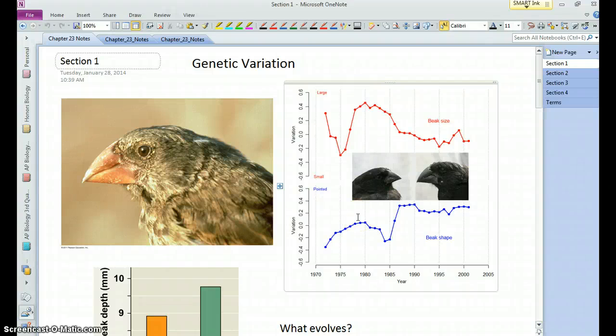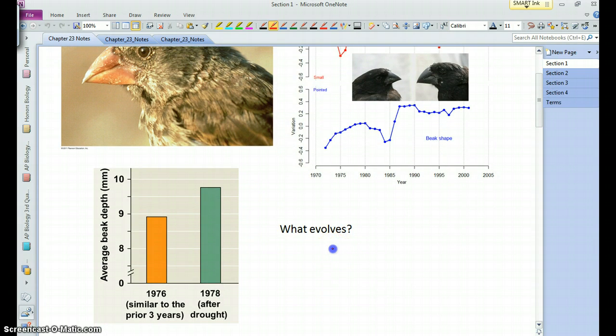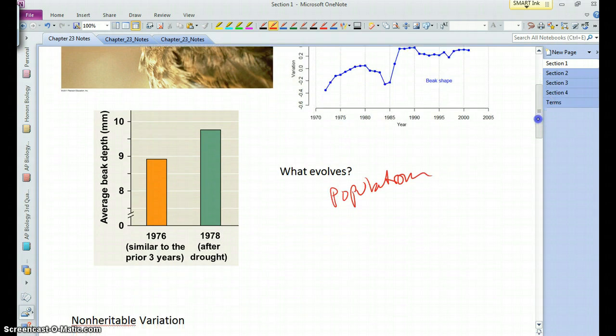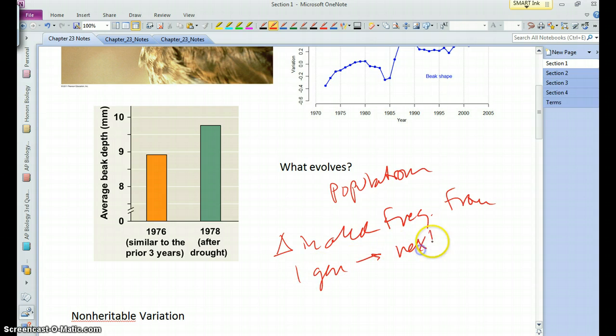Okay, in Chapter 23 we're going to talk about microevolution, or essentially the evolution that occurs in populations, because at the microevolutionary scale, indeed what evolve are populations. And we can specifically define microevolution as a change in allele frequencies from one generation to the next.